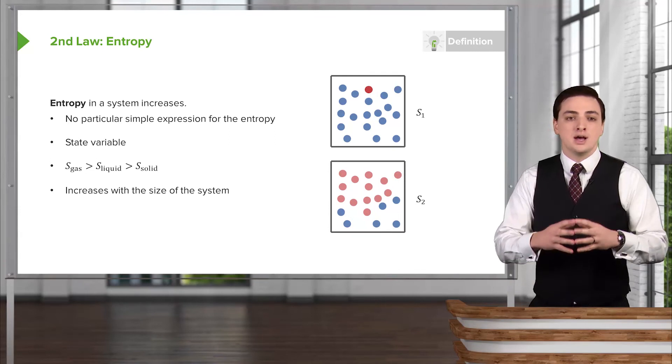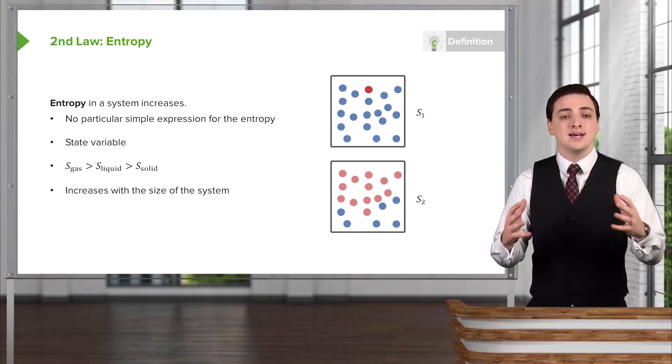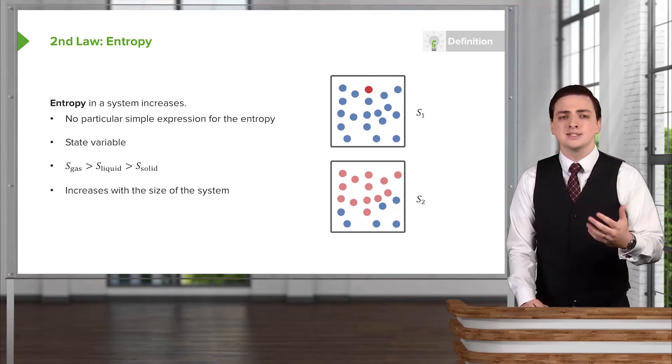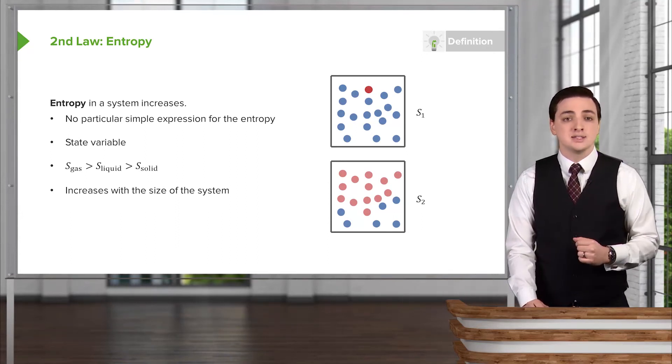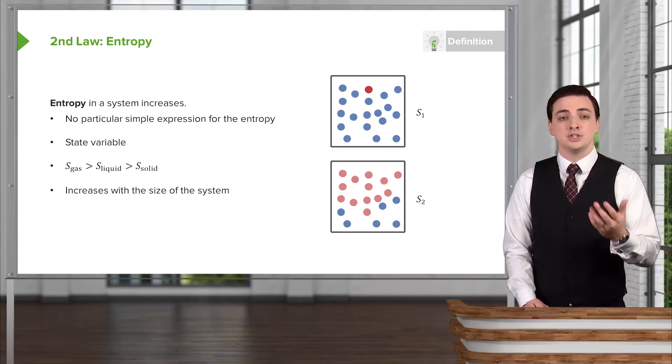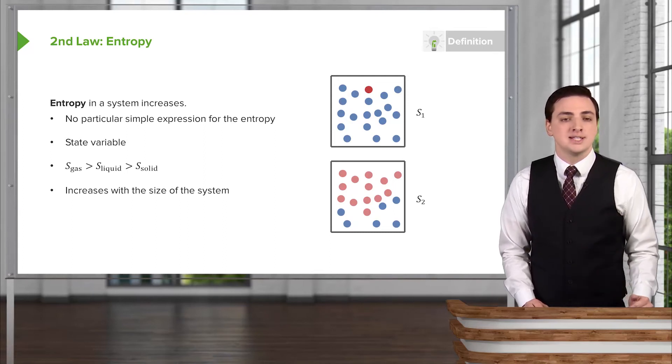So again, for entropy, we have this variable that increases as the size of the system increases, more like something like energy. If I double the size of a system just by duplicating the system, I would say there is now twice as much energy present. And the entropy follows that same idea.